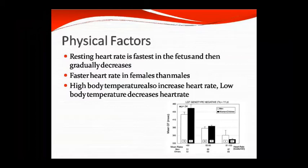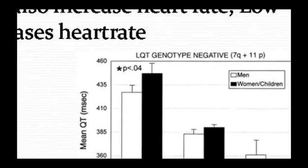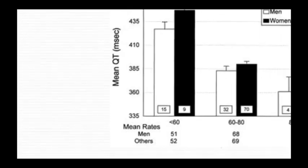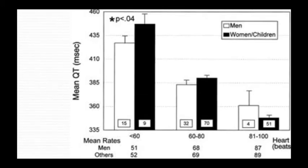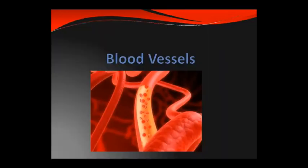A faster resting heart rate is seen in females compared to males — females have a higher heart rate in comparison. If body temperature is high, the heart rate will also increase; low body temperature will reduce heart rate. These are the physical factors which cause changes in heart rate. Heart rate differs across men, women, and children, as shown in the diagram.